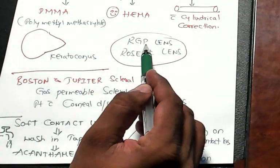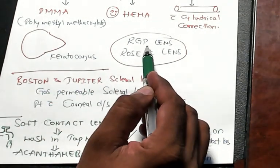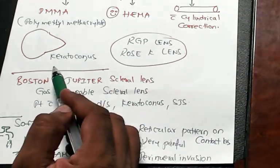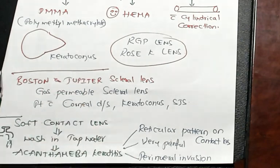Keratoconus, two special types of lens doctor: RGP lens and Rose K lens. They are the ones which are used in the keratoconus.